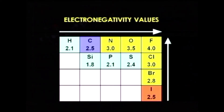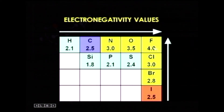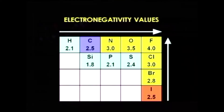We can see the electronegativity values of certain elements important for understanding inductive effect. Fluorine has the highest electronegativity value, followed by oxygen, nitrogen, chlorine, and bromine. Electronegativity decreases down the group and increases when moving left to right in the same period. Hence, fluorine bonded to a carbon atom will attract the sigma electrons strongly towards itself.